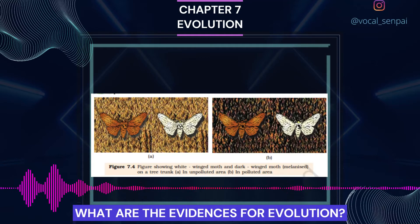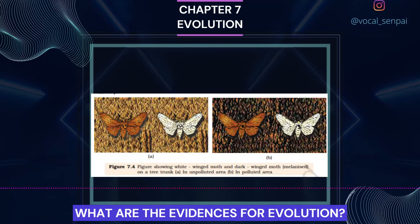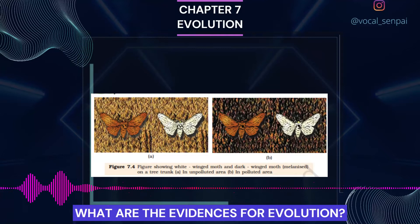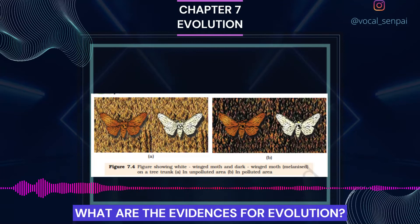Before industrialization set in, thick growth of almost white-colored lichen covered the trees. In that background, the white-winged moth survived but the dark-colored moth were picked out by predators. Lichens can be used as industrial pollution indicators — they will not grow in areas that are polluted. Hence, moths that were able to camouflage themselves in the background survived. This understanding is supported by the fact that in areas where industrialization did not occur, such as rural areas, the count of melanic moths was low. This showed that in a mixed population, those that can better adapt survive and increase in population size.